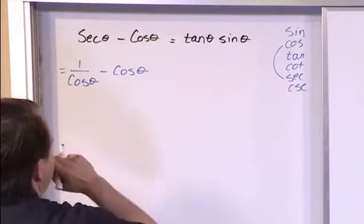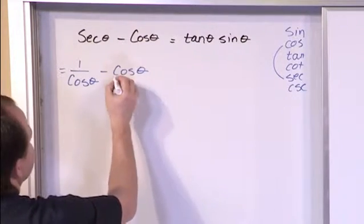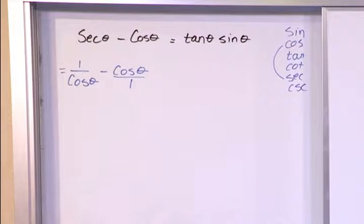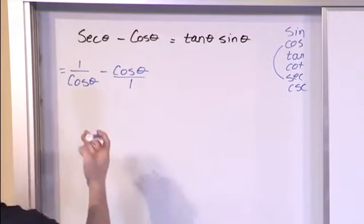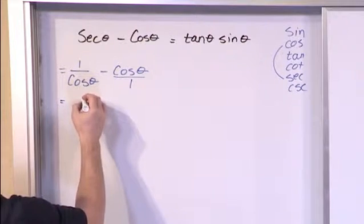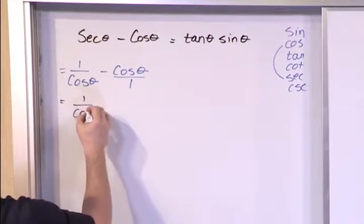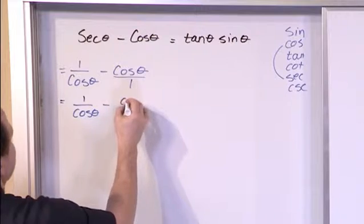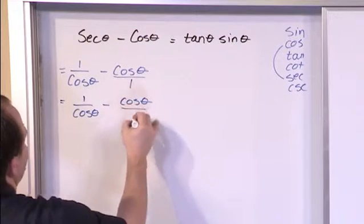These basically are two fractions because when you think about it this cosine theta is like cosine over 1. So how can you manipulate that? Well you can say this is 1 over cosine of theta minus cosine of theta over 1.